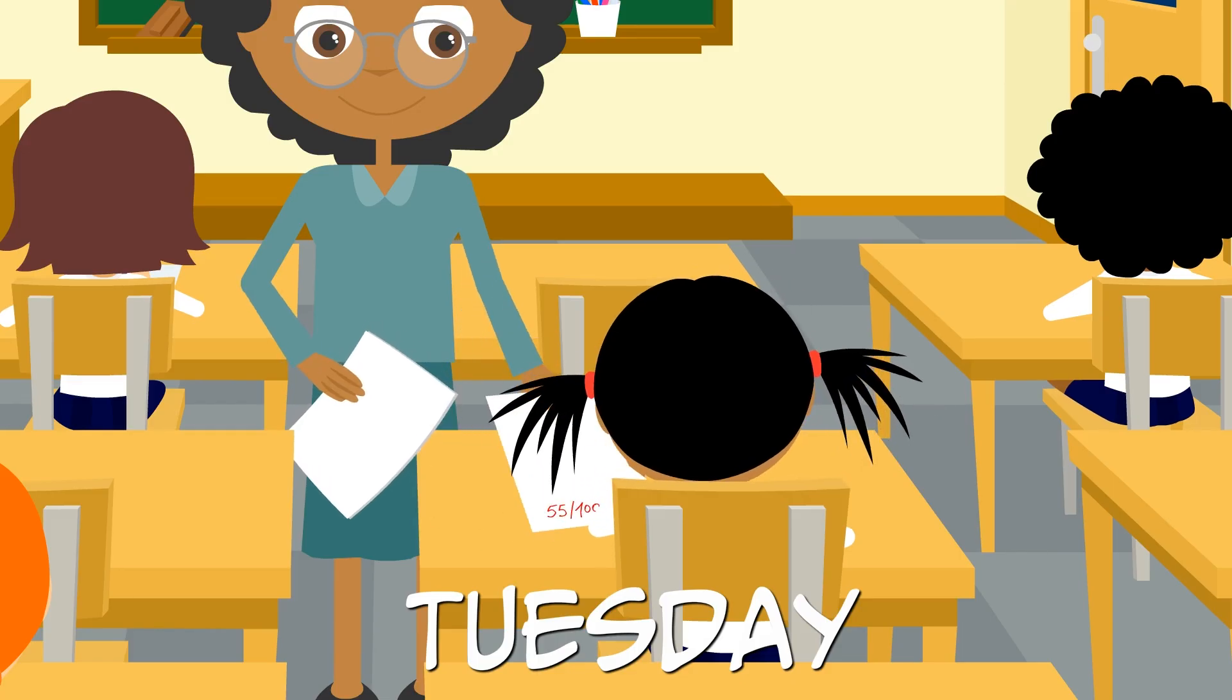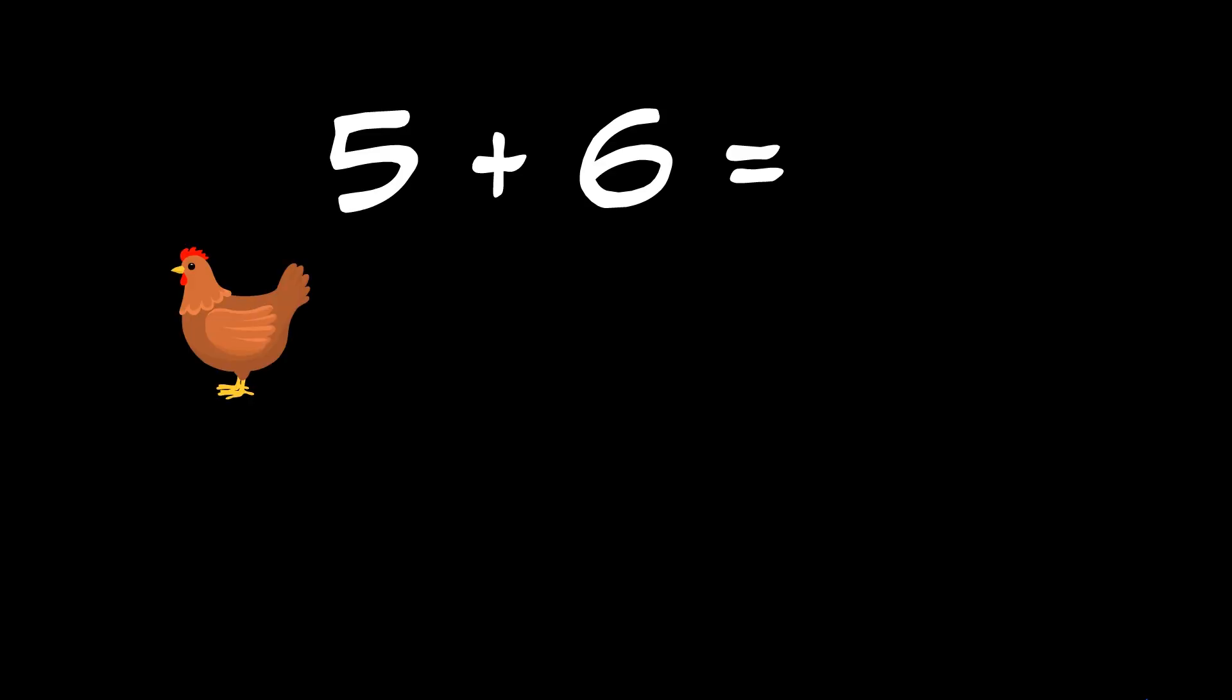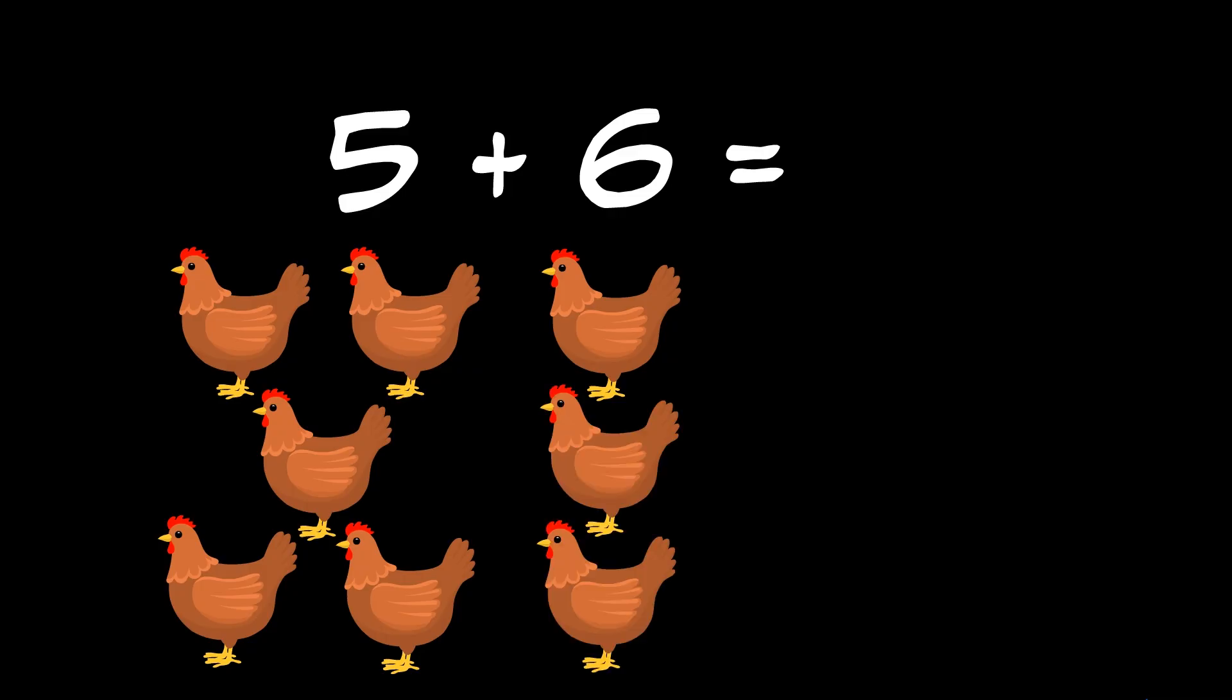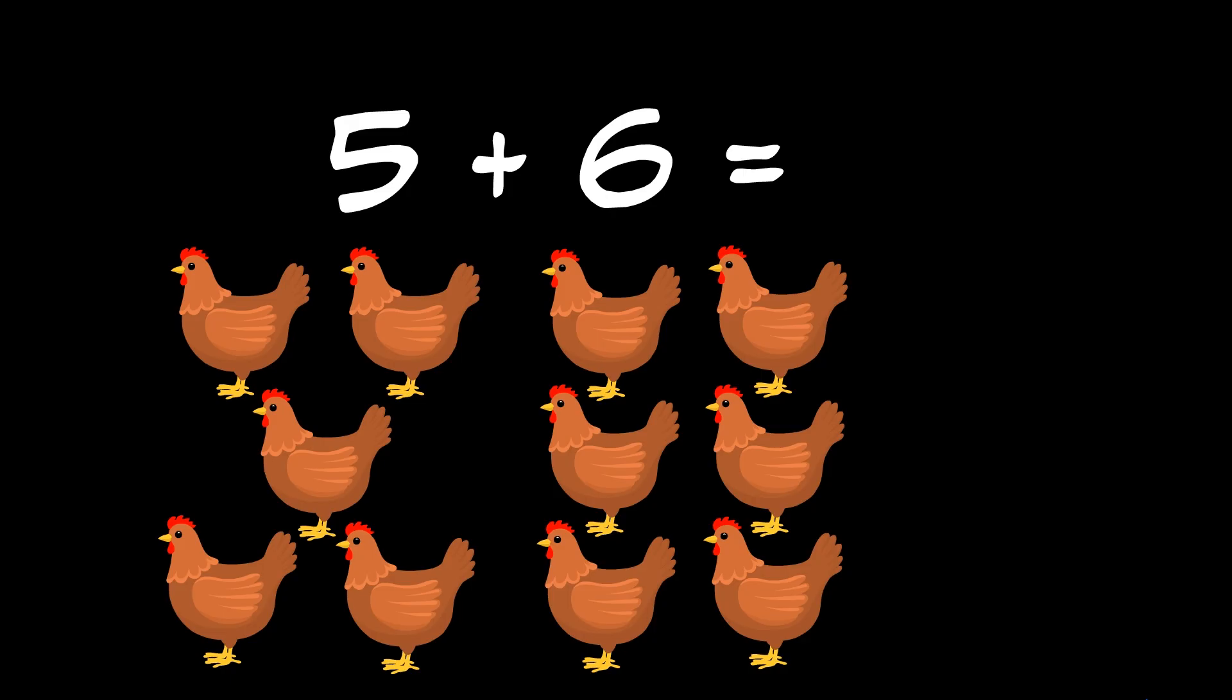Shall we try another one? Another high-choline food is chicken. If we had five chickens, and added six more chickens, how many chickens would we have all together? Have you worked it out? Eleven chickens.